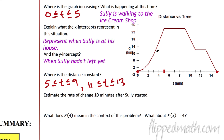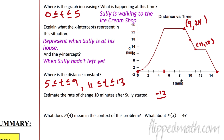Estimate the rate of change 10 minutes after Sully started. At 10 minutes — I'm going to get a point right here, about (9, 24). We're approximating. Then it goes down to this point right here, about (11, 12). Now we can estimate his rate of change: he goes down 12, from 24 to 12, over 2 minutes. So that is negative 6 kilometers per minute. He's going 6 kilometers per minute — that's actually pretty fast!